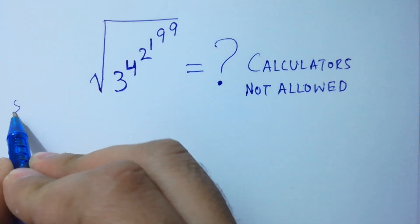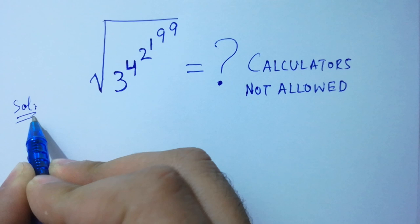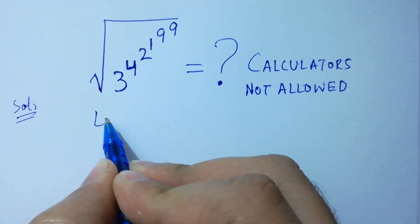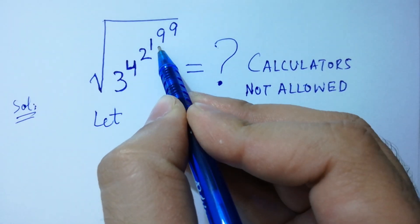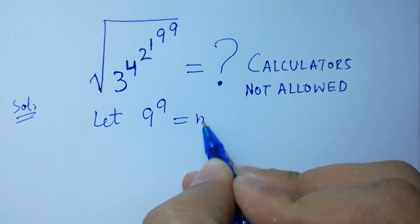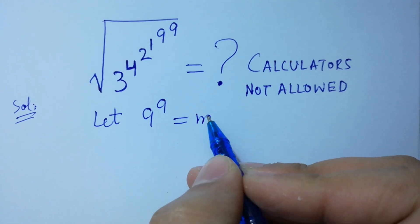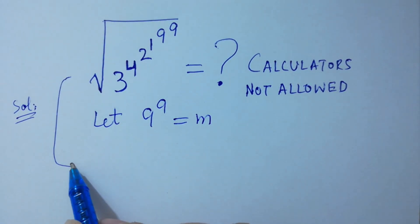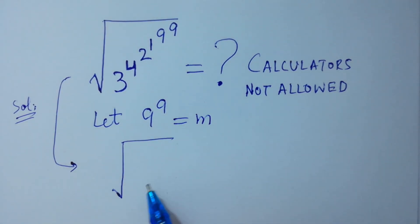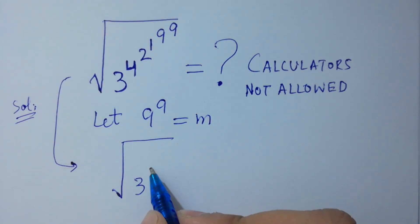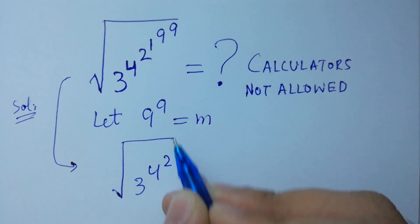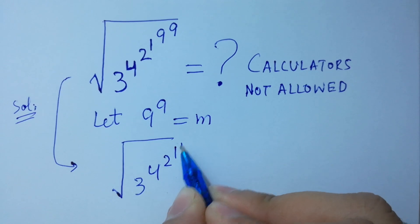Let us find the solution. Let 9 to the power 9 equal to m. Then we have the scale root of 3 to the power 4 to the power 2 to the power 1 and 9 to the power 9, which is to the power m.